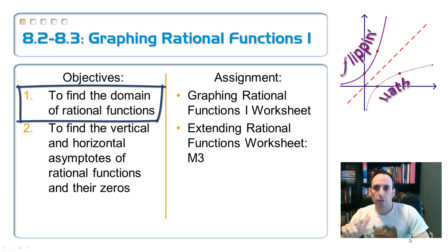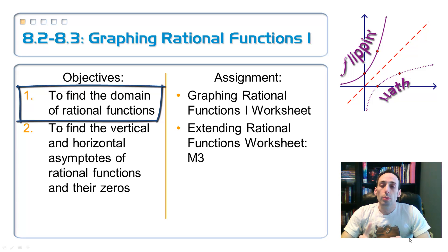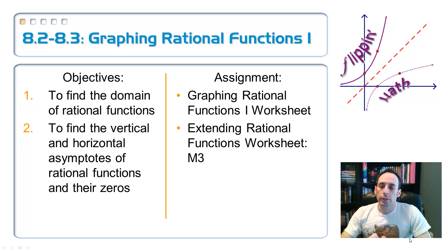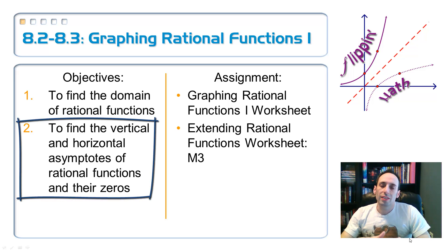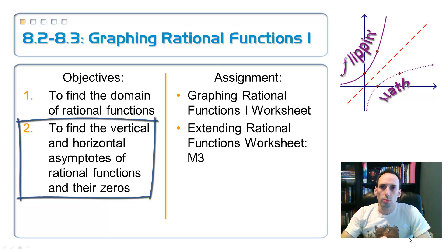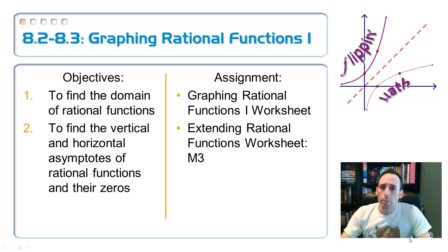Our first objective here is to find the domain of rational functions. This is something that we've done before, but specifically we're going to talk about dividing by zero. We also have objective two, where we're finding things called asymptotes — vertical and horizontal asymptotes — and also the zeros of these rational functions. We've found zeros before, but now we're putting it together with rational functions.